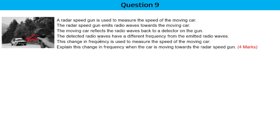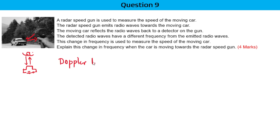Explain this change in frequency when the car is moving towards the radar speed gun. Let's say you have a car and a radar gun here — the gun emits a wave with a certain frequency, but when it detects the car and it comes back, the frequency is going to be different. This is because of the Doppler effect.